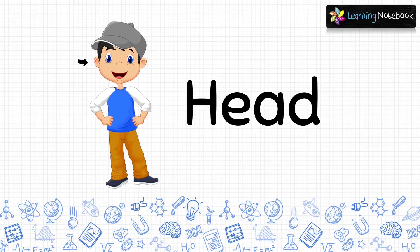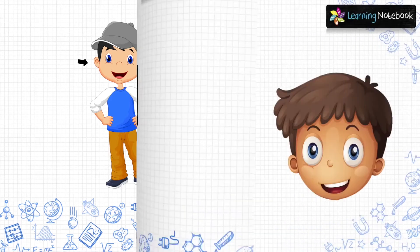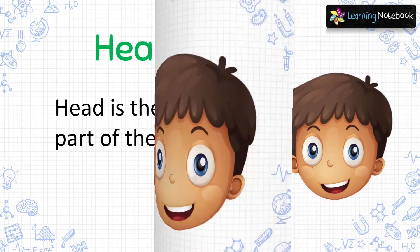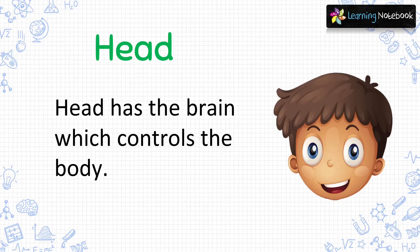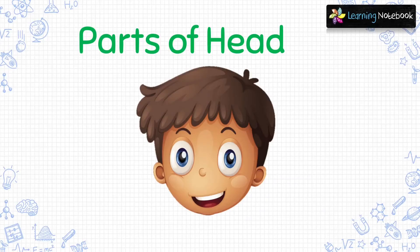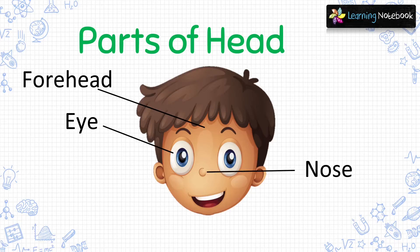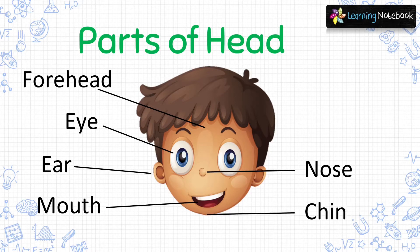Now, let's first talk about the first external body part which is head. Head is the topmost part of our body. Head has the brain which controls the body. Now, let's see parts of head: forehead, eyes, nose, ears, mouth and chin. These are parts of the head.